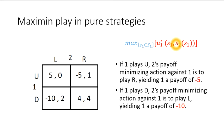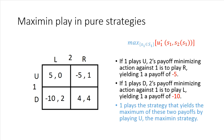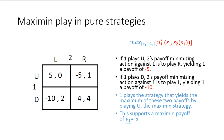Now we solve the outside optimization problem from player one's perspective. Basically, we look at these two payoff values and choose the strategy for player one that induces the larger one. If player one wants to play the strategy that yields the larger of these two payoffs — either negative five or negative ten — then he wants to play strategy U, which would induce a payoff of negative five, given that the profile that induces that would have player two playing strategy R. So the Maximin payoff for player one in this game, considering only pure strategies, is negative five, and the profile that induces that is player one playing his Maximin strategy of U against player two playing R.